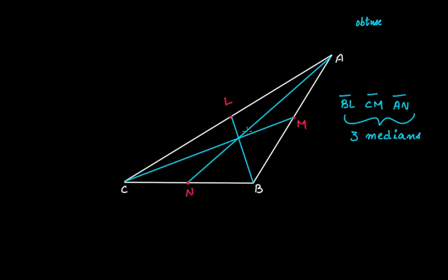Therefore, in any triangle there will always be three medians, and all the medians will lie inside the triangle — they are all located inside the triangle.